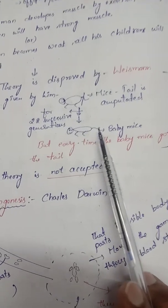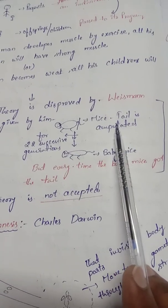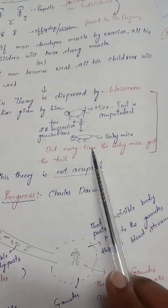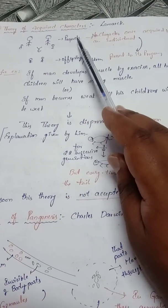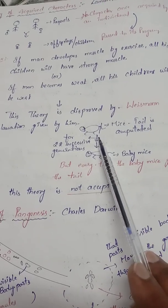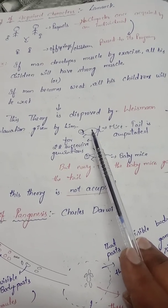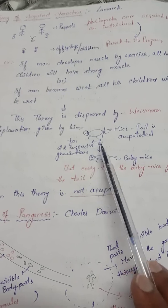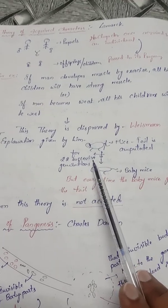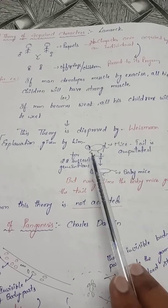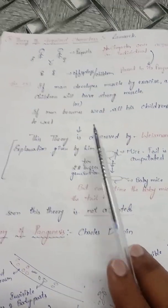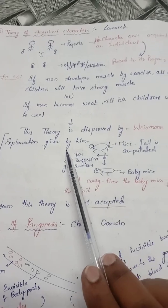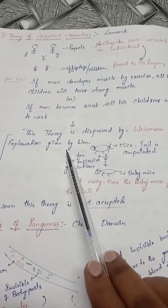The offspring of the mice whose tails were amputated still had tails in every generation. According to the theory of acquired characters, since the tail was removed from the parent, the progeny should not have tails — but this did not happen. By this experiment, August Weismann disproved the theory of acquired characters, so this theory is not accepted.